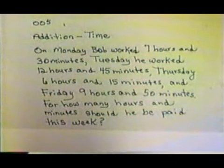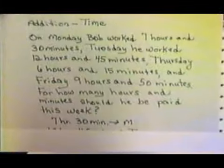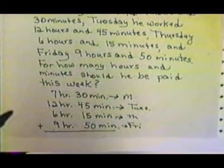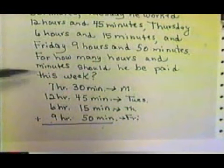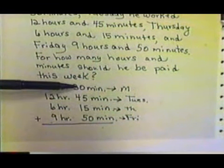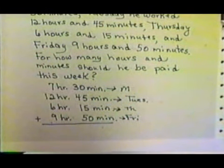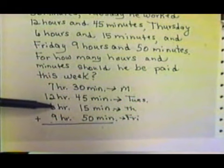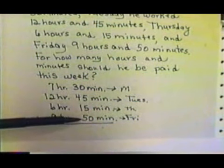What we need to do is organize things and line up our hours and minutes that he worked each day. On Monday, he worked 7 hours and 30 minutes. Tuesday, 12 hours and 45 minutes. Notice he didn't work on Wednesday, but that's probably because he worked the 12 hours on Tuesday. On Thursday, he worked 6 hours and 15 minutes. And on Friday, he worked 9 hours and 50 minutes.